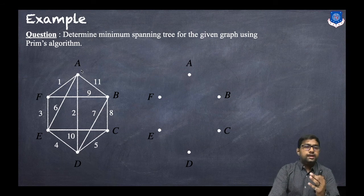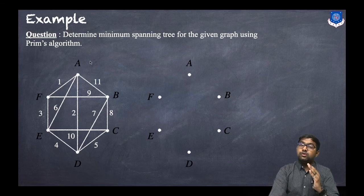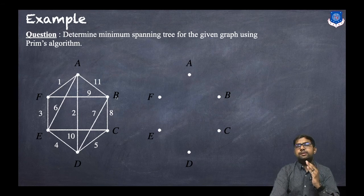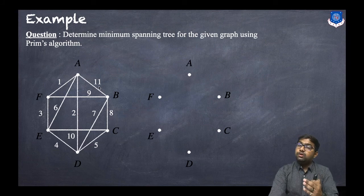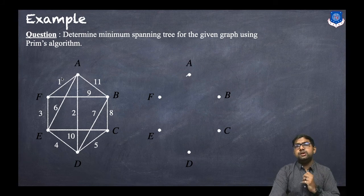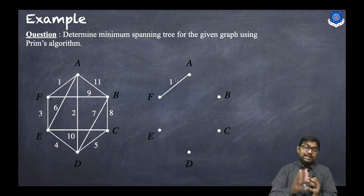Starting from A, we select the minimum weighted edge adjacent to A. The adjacent vertices are F, E, D, and B, with weights 1, 6, 2, and 11 respectively. The minimum weight is 1, so we draw this edge A–F with weight 1.